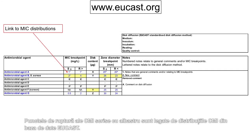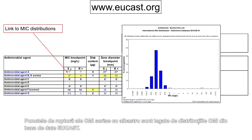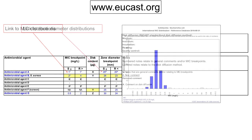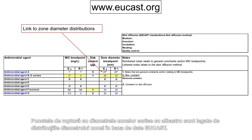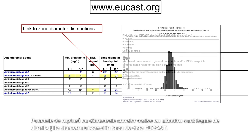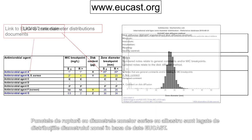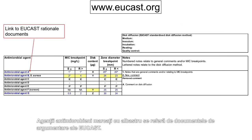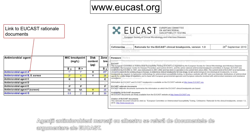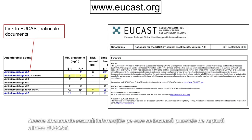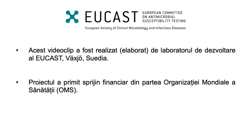MIC breakpoints in blue are linked to MIC distributions in the EUCAST database. Zone diameter breakpoints in blue are linked to zone diameter distributions in the EUCAST database. Antimicrobial agents in blue are linked to EUCAST rationale documents. These documents summarize the information on which the EUCAST clinical breakpoints are based.